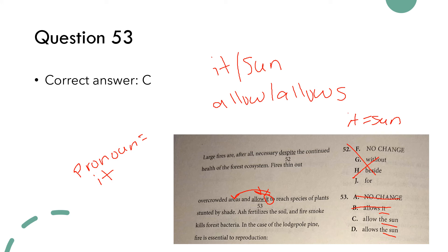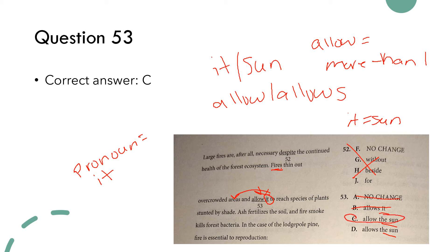Now we're deciding: is it 'allow' or 'allows'? This comes down to number agreement. 'Allow' without the S means the subject is more than one. There are multiple fires — fires has that S — so with 'fires' as the subject, we use 'allow.' The answer to 53 is C: 'allow the sun,' because 'fires' goes with 'allow.'